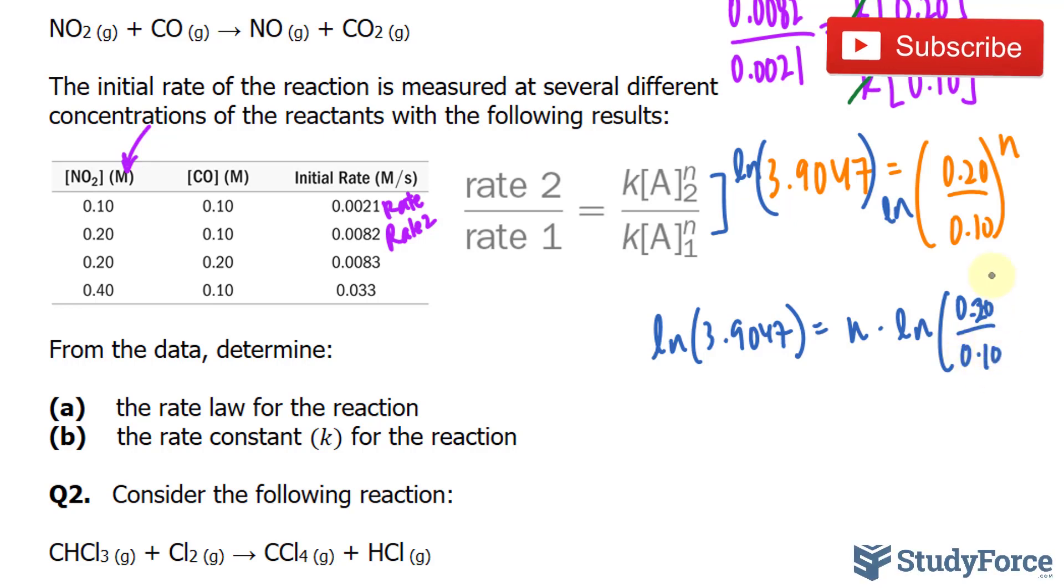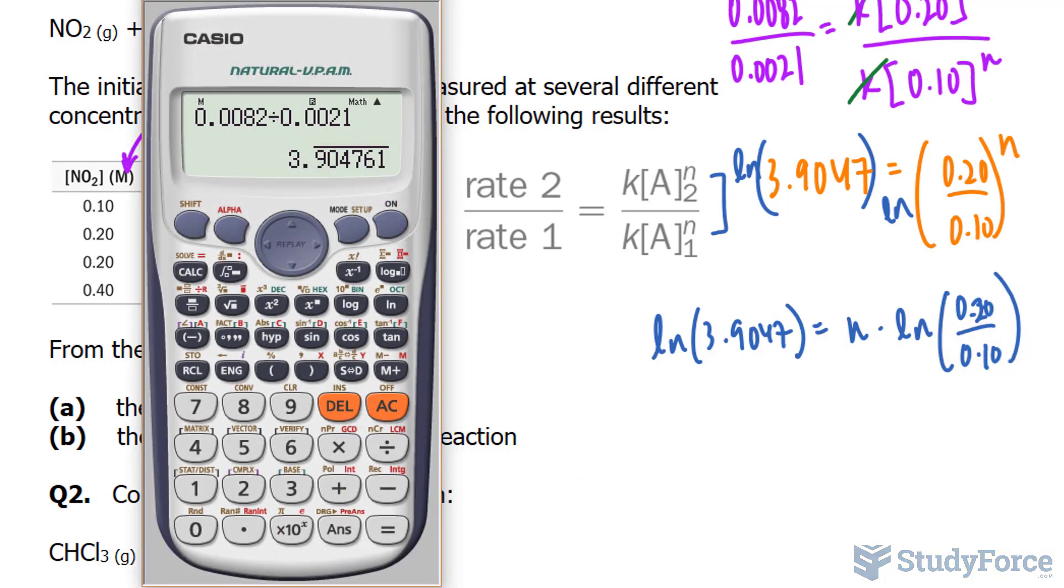Let's go ahead and solve for n by first taking ln of this number and dividing it out by whatever the ln of that is. So I'll write down ln 0.2 divided by 0.1. And we get an n value of 1.965.